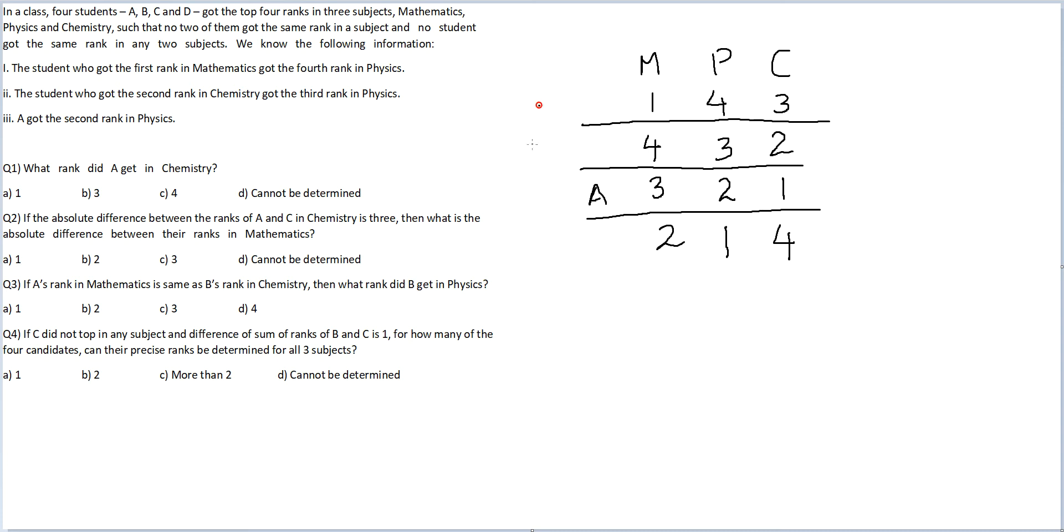We don't know if B comes here, C comes here or D comes here but we know those three have to get accommodated there. Let's look at the individual questions. What rank did A get in Chemistry? In Chemistry, A has got rank one. Therefore, the answer to this question is option A.